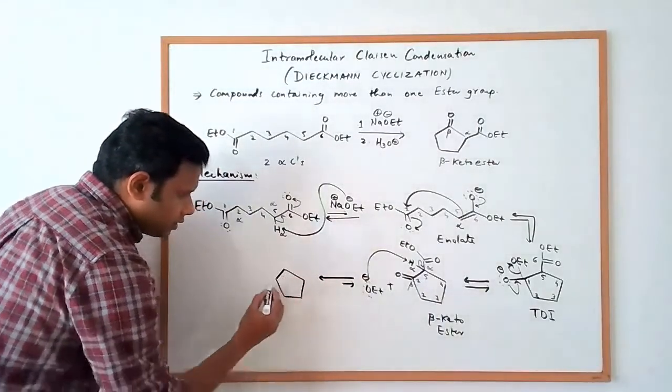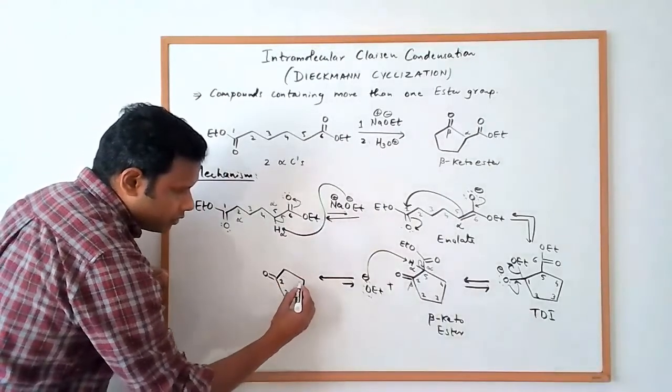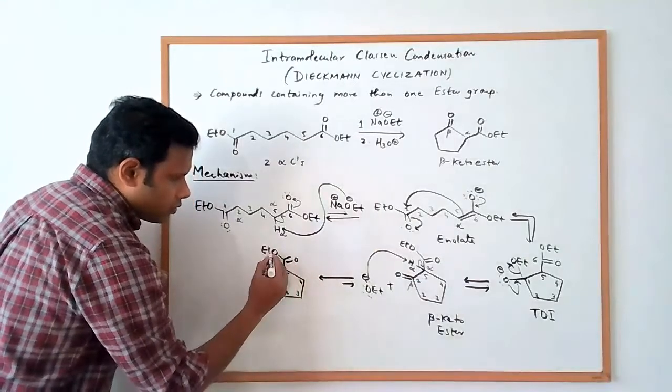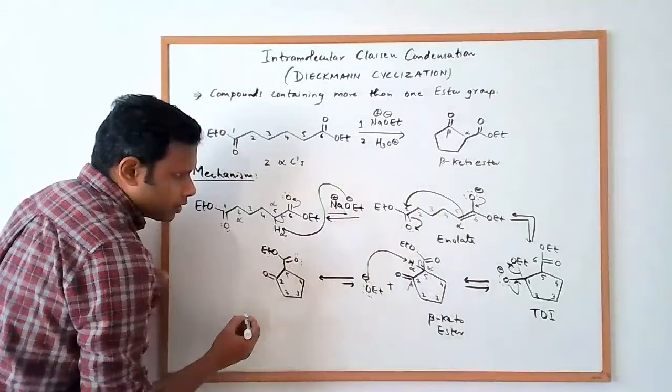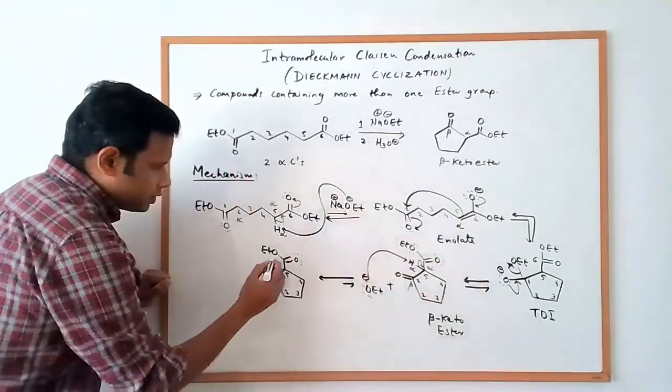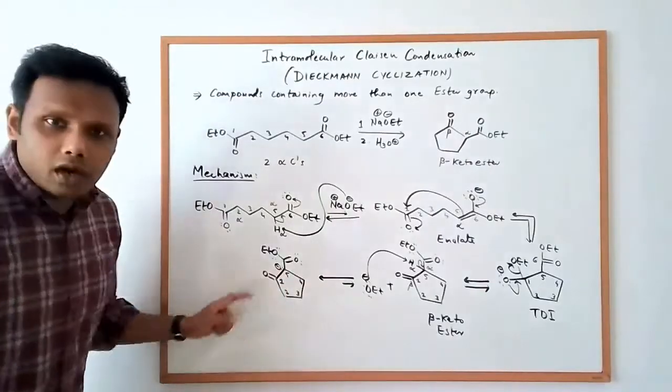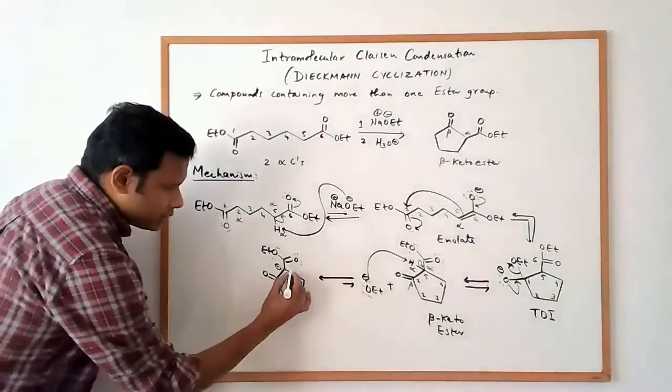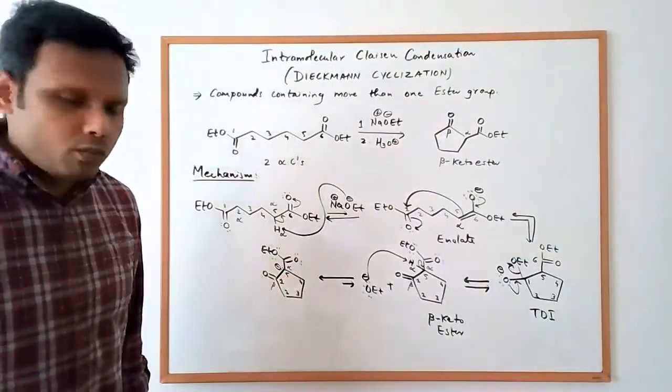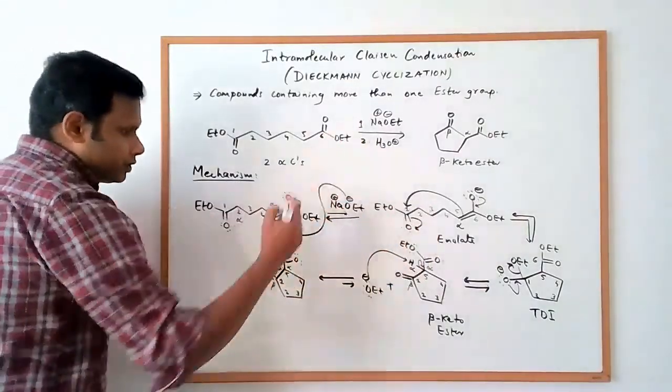So that would be the step that would push this equilibrium towards the product. So that what we get is carbon 1 has double bond O, 3, 4, 5. C double bond O, OEt. So these are all oxygens there. And we have a negative charge on carbon number 5, which is our alpha carbon and the beta carbon is that carbon 1. And so that's everything happening in the first step.